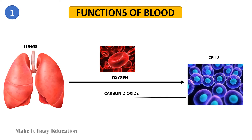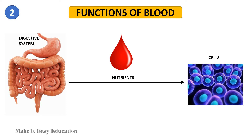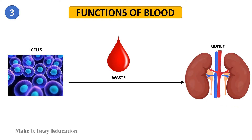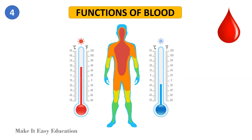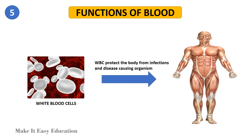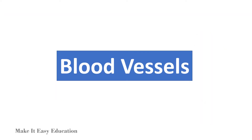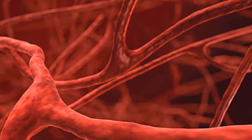Red blood cells also collect carbon dioxide from the cells and take it back to the lungs. Blood carries the nutrients generated during digestion from different parts of the digestive system to all the cells in the body. Blood helps carry waste generated by the cells to the kidneys for filtering, and helps maintain the body's temperature — preventing it from becoming too hot or too cold. The white blood cells present in the blood protect the body from infections and disease-causing organisms.